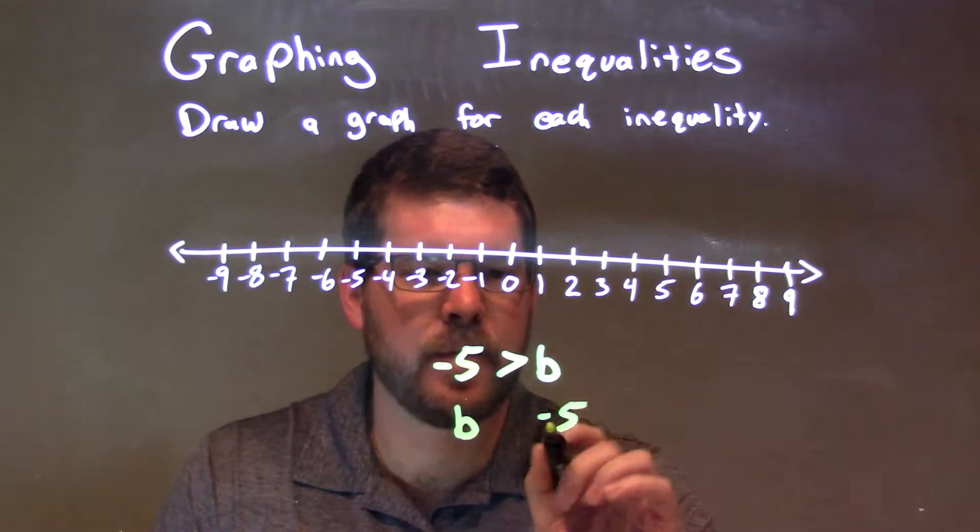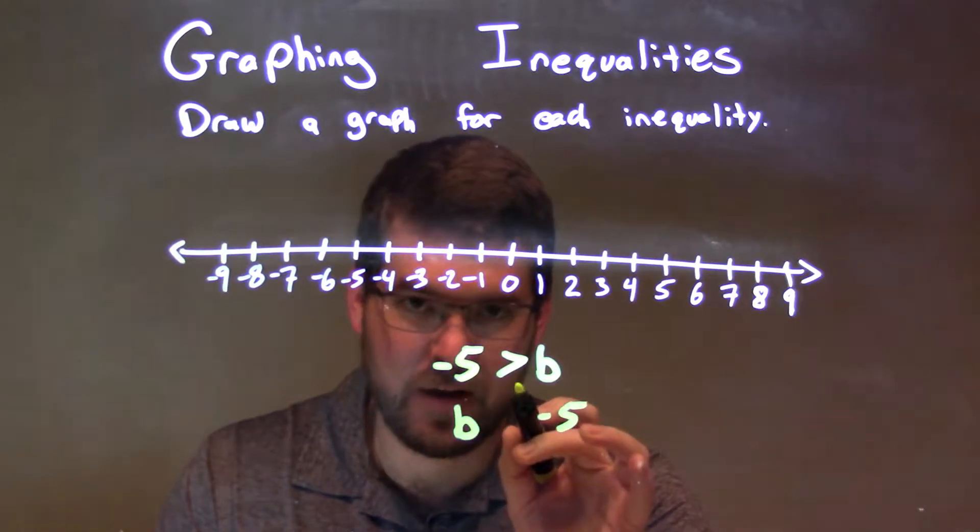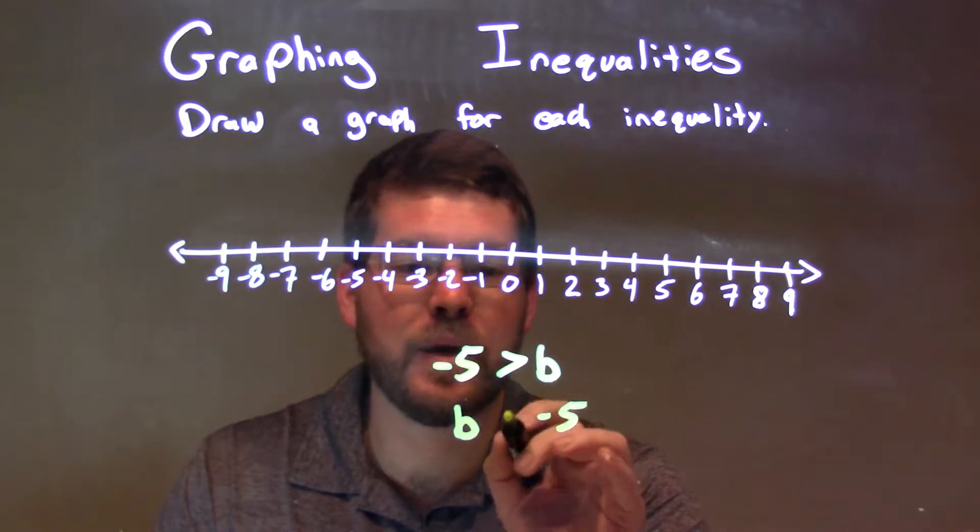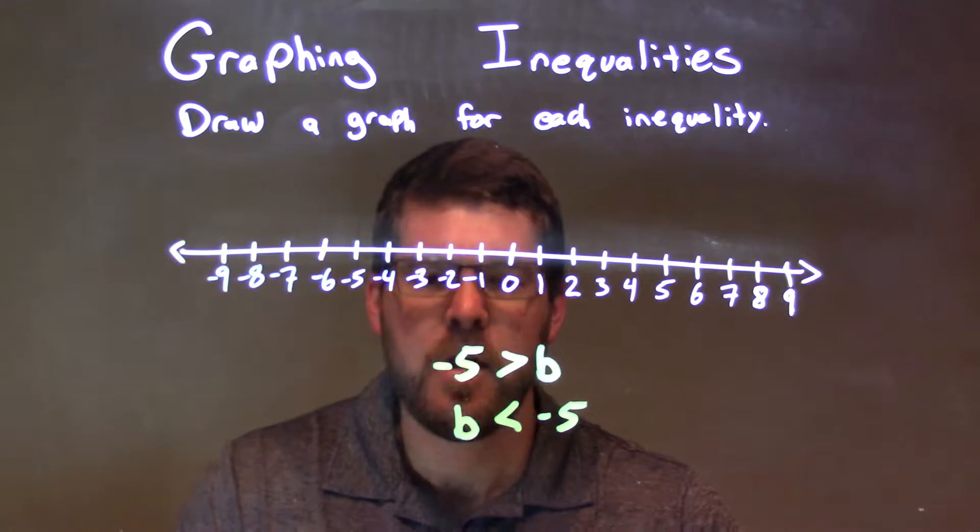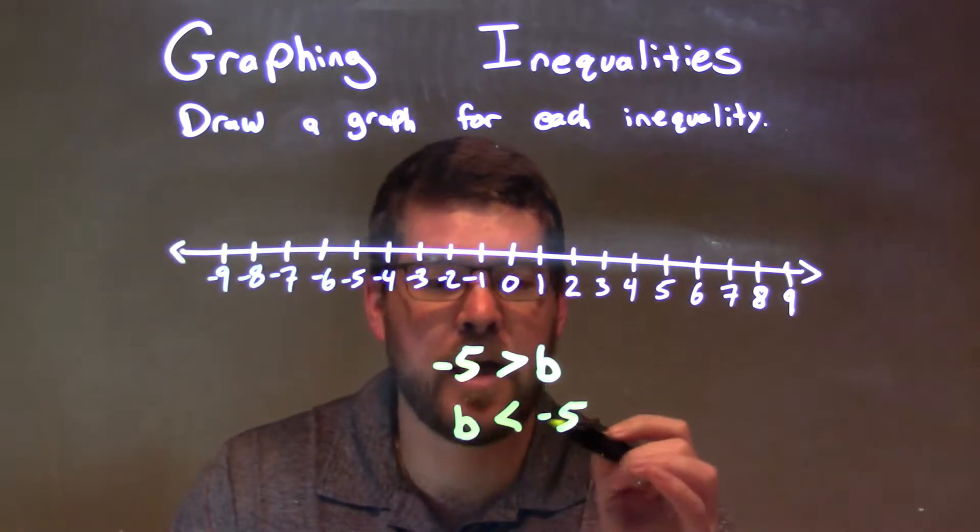But by flipping the inequality like that, I need to flip the inequality sign from a greater than sign to a less than sign. So now, negative 5 being greater than b is the same thing as b being less than negative 5.